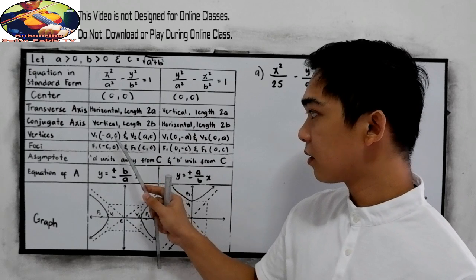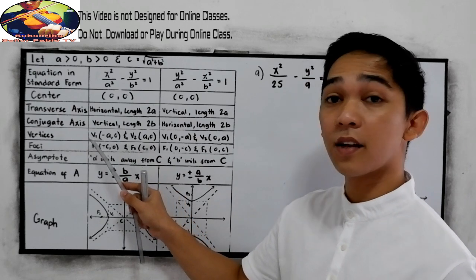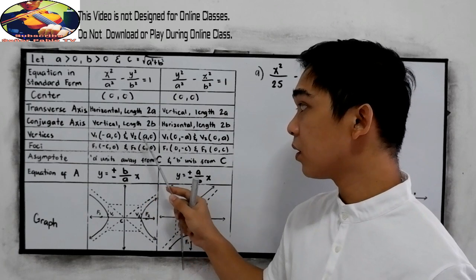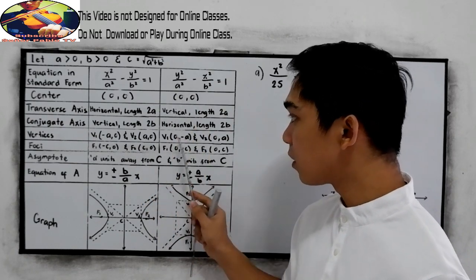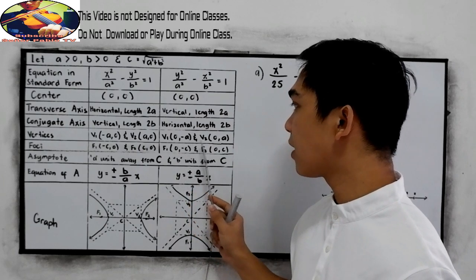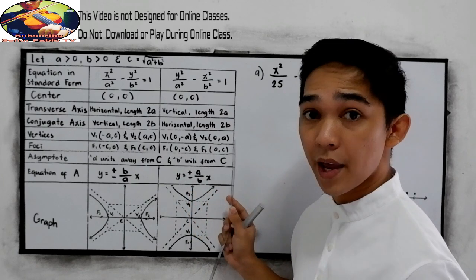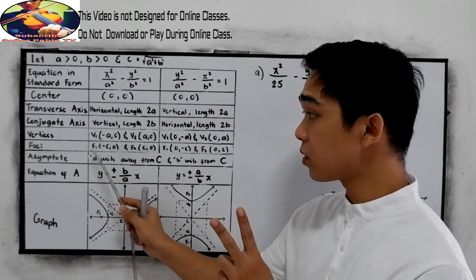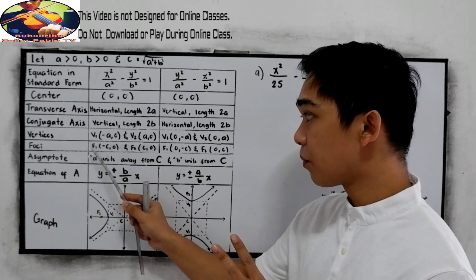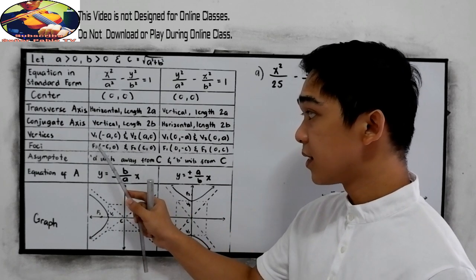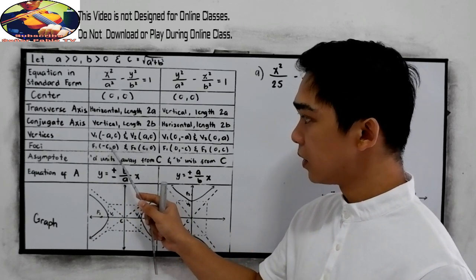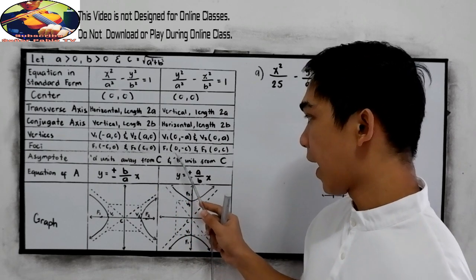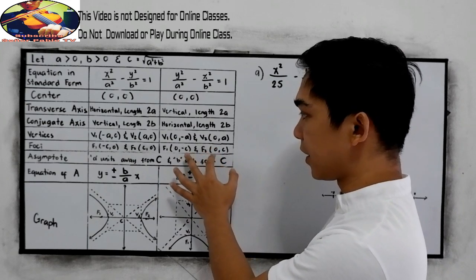For the vertices: vertex sub 1 is at (−A, 0) and vertex sub 2 is at (A, 0) for the first form. In the second form, vertex sub 1 is at (0, −A) and vertex sub 2 is at (0, A). For the foci, we have two foci: focus sub 1 at (−C, 0) and focus sub 2 at (C, 0) for the first form, with positive and negative C.